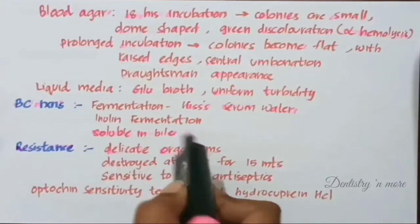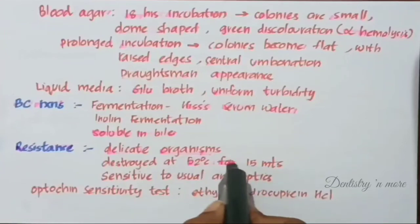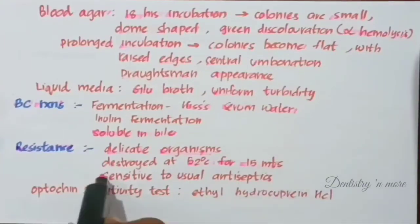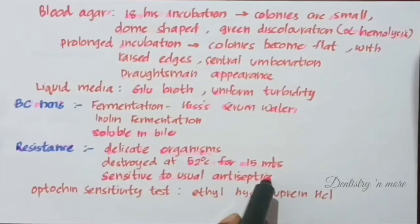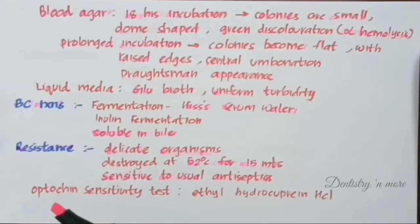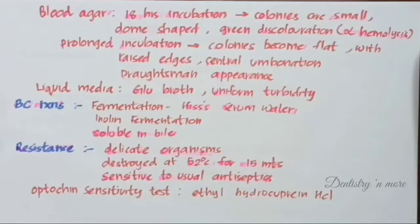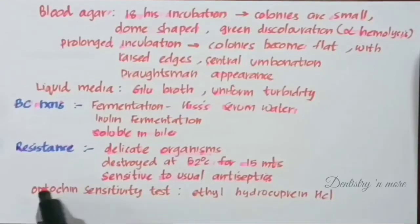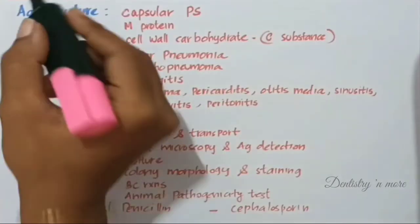Regarding resistance, Streptococcus pneumoniae are very delicate organisms — they can be destroyed at 52 degrees Celsius for 15 minutes and are sensitive to usual antiseptics. In the optochin sensitivity test, optochin (ethyl hydrocuprein hydrochloride) at a concentration of 1 in 25,000 shows a zone of inhibition. When an optochin disc is applied on blood agar inoculated with pneumococci, a zone of inhibition occurs on incubation, which is very useful to differentiate pneumococci from other streptococci.